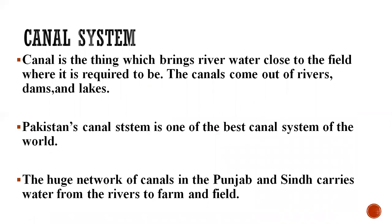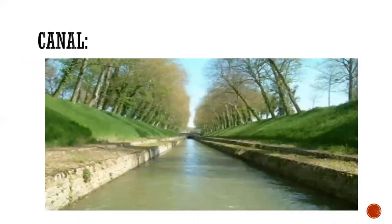Let's look at the canal system. A canal brings river water close to the field where it is required. Canals come out of rivers, dams, and lakes. Pakistan's canal system is one of the best in the world, with a huge network of canals in Punjab and Sindh carrying water from rivers to farms and fields.